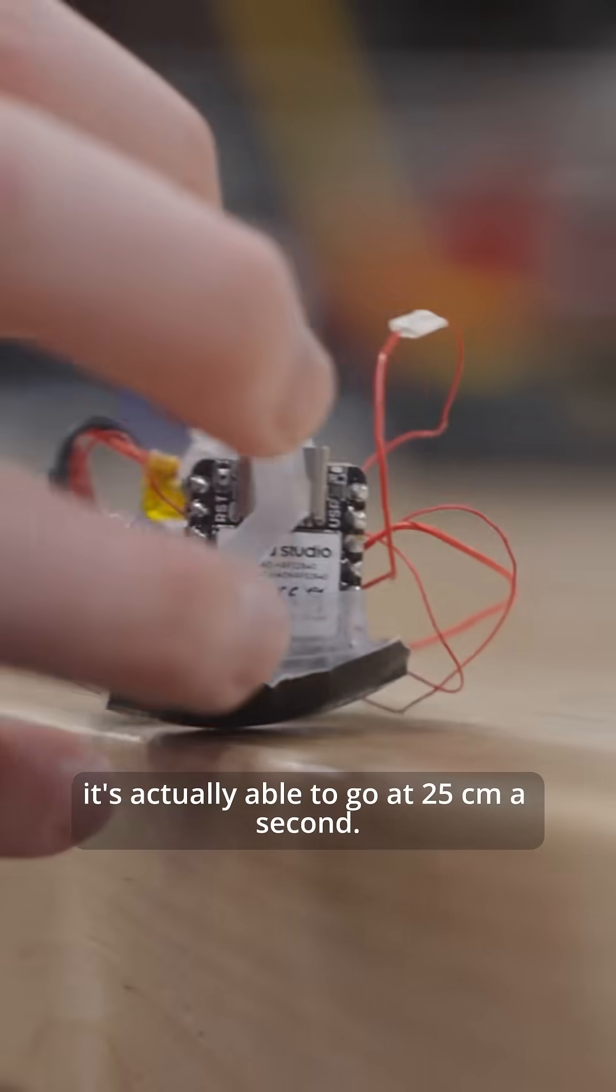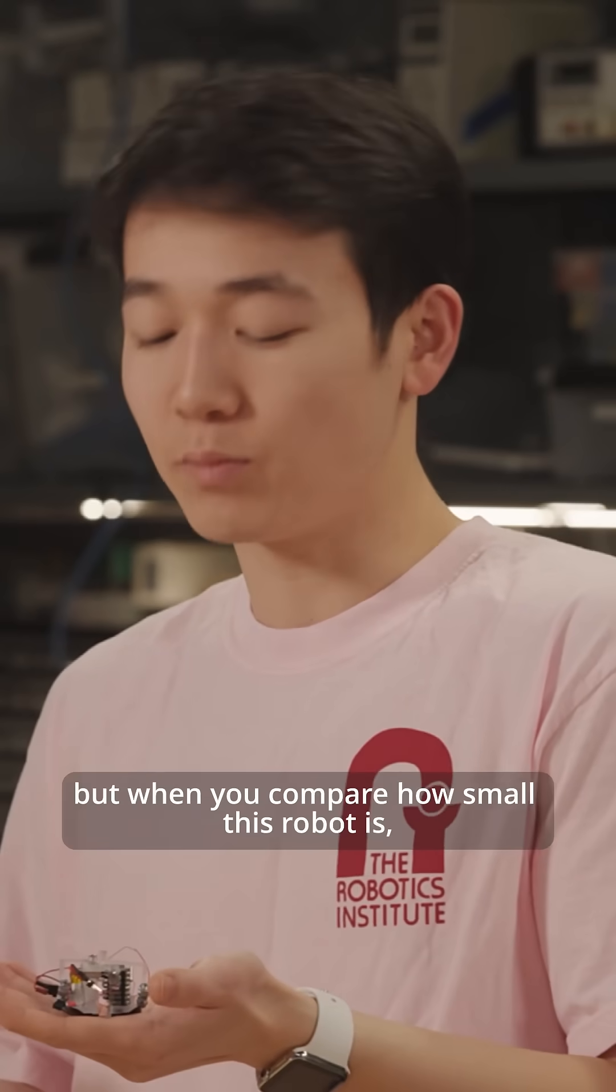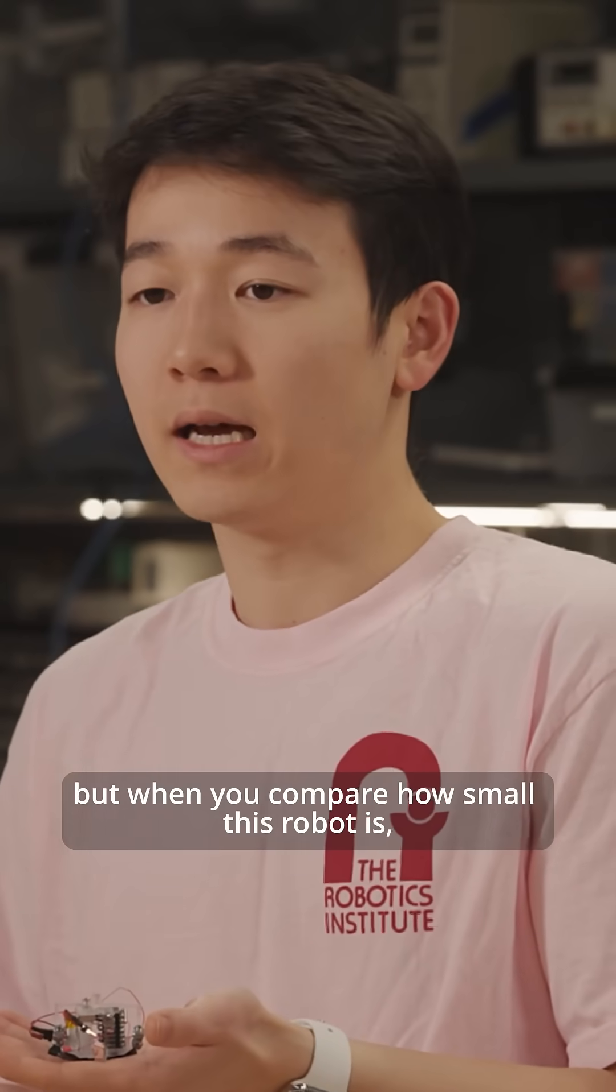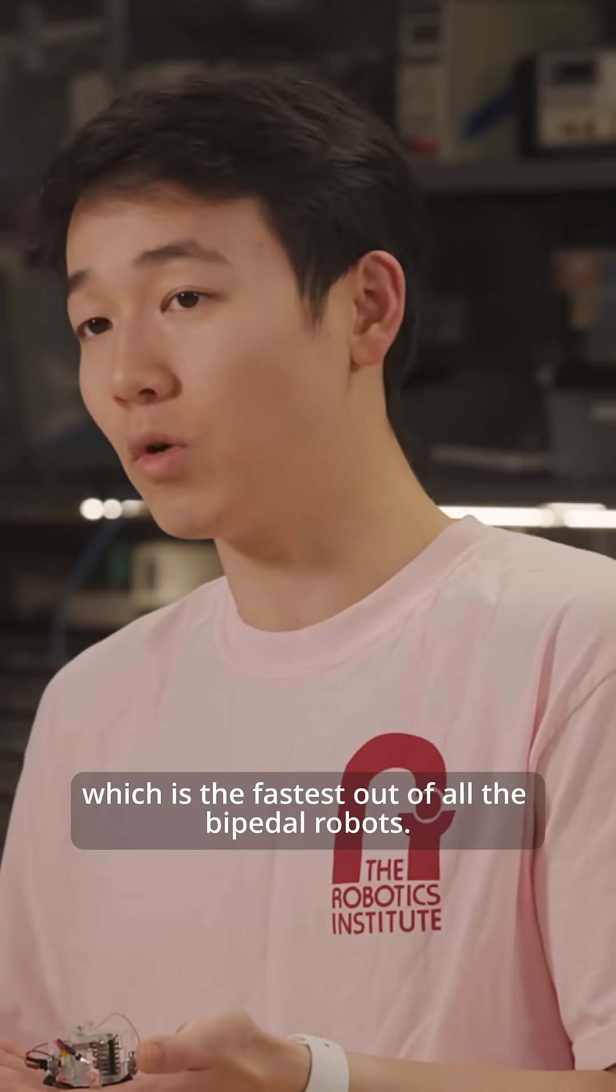And with this robot, it's actually able to go at 25 centimeters a second. It's not quite that fast, but when you compare how small this robot is, it's about 10 leg lengths per second, which is the fastest out of all the bipedal robots.